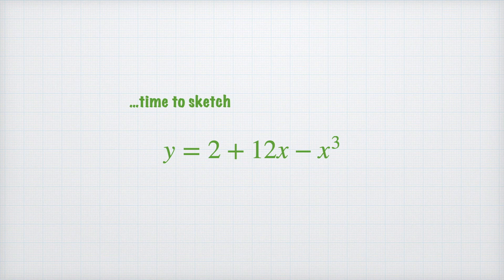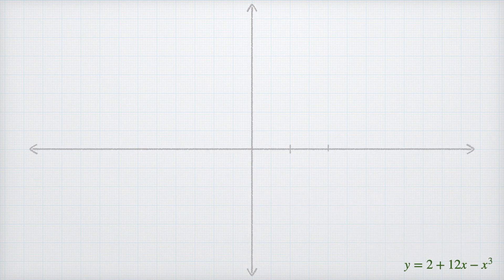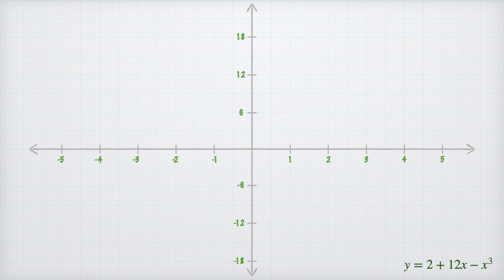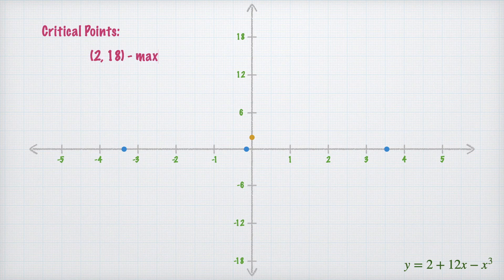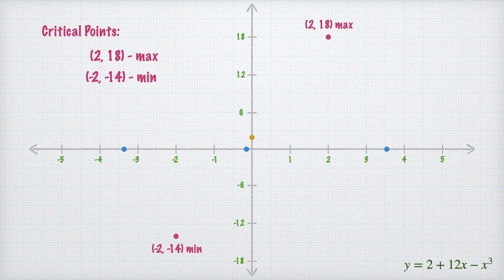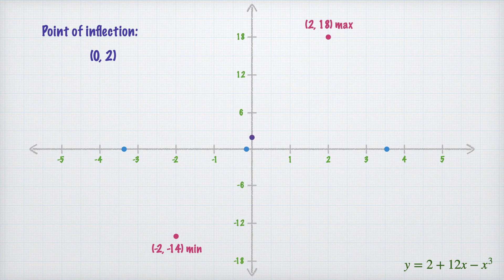Now it's time to sketch y equals 2 plus 12x minus x cubed. We draw the Cartesian plane with equal scaling. The x-intercepts are negative 3.378, negative 0.167, and positive 3.545. The y-intercept is at positive 2. We plot the critical points: maximum point (2, 18) and minimum point (negative 2, negative 14). We also plot the point of inflection at (0, 2).